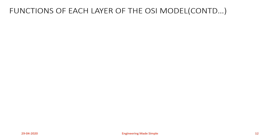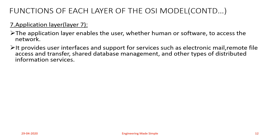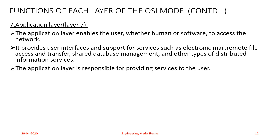The next and final layer of the OSI model is the Application layer. The Application layer enables the user — whether human or software — to access the network resources. It provides user interfaces and support for services such as remote mail, remote file access and transfers, shared database management, and other types of distributed information services. In simpler terms, the Application layer is responsible for providing services to the user.